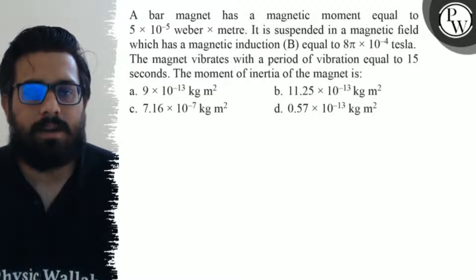The magnet vibrates with a period of vibration equal to 15 seconds. The moment of inertia of the magnet is: your first option is 9 × 10^-13 kg·m². Second option is 11.25 × 10^-13 kg·m².